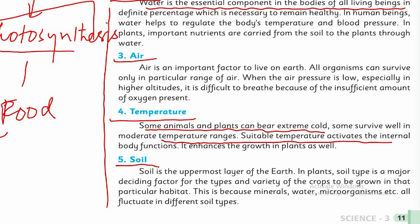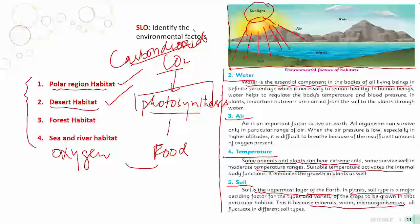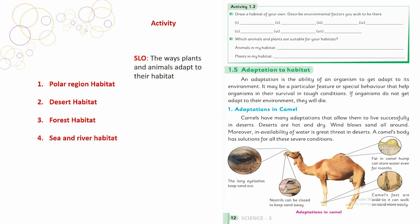The next factor is soil. All plants grow in soil and get their nutrition from it. Soil is the uppermost layer of the earth. For plants, soil type is a major deciding factor for the types and variety of crops that can be grown in a particular habitat. Different types of soils help in growing different types of plants — a plant that grows in one type of soil will not necessarily grow in another.